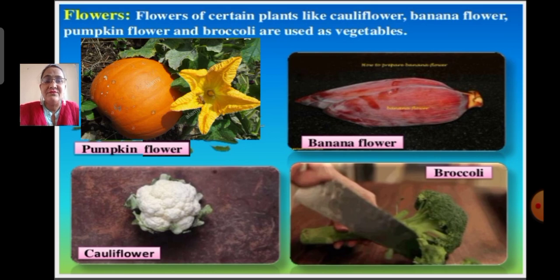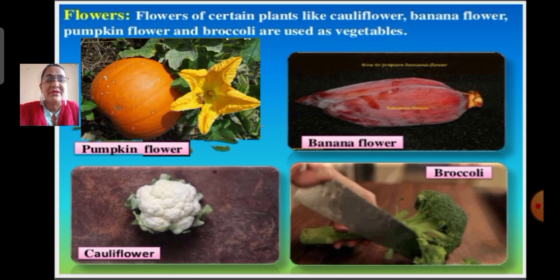Next are edible flowers — the flowers that we eat. Flowers of certain plants like cauliflower, banana flower, pumpkin flower and broccoli are used as vegetables. Here on the screen I have shown you images of pumpkin flower, banana flower, cauliflower and broccoli. These are the edible flowers.